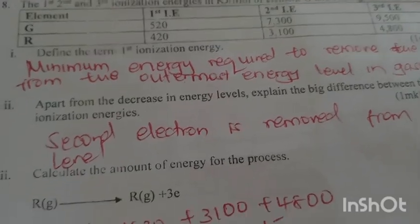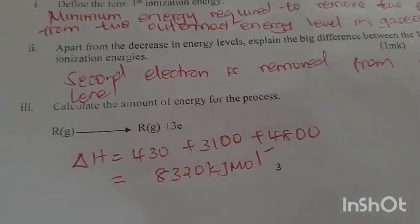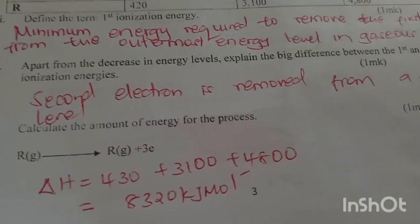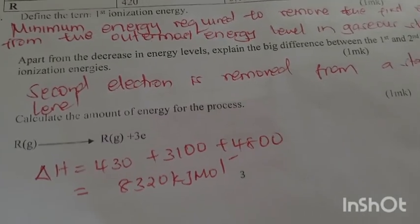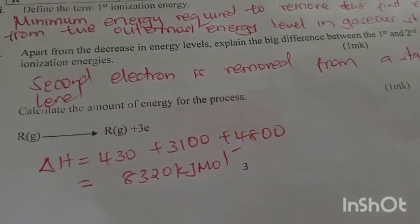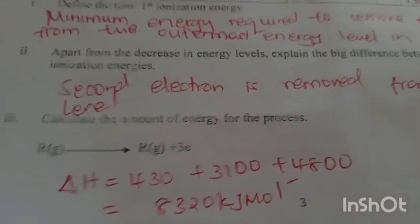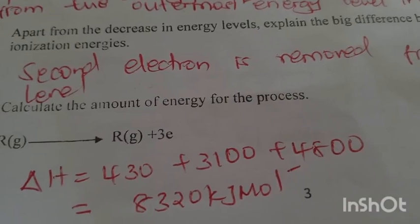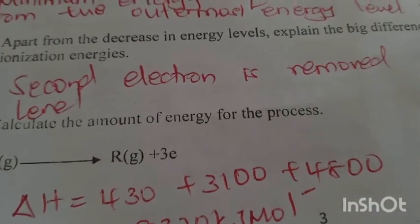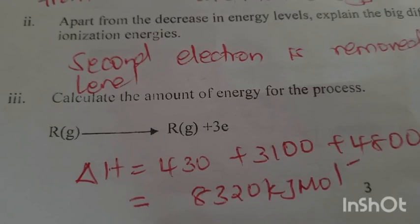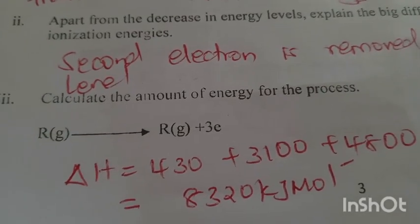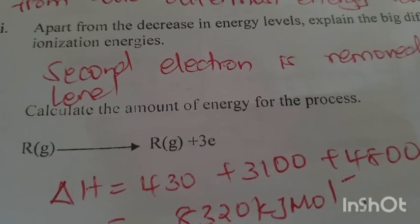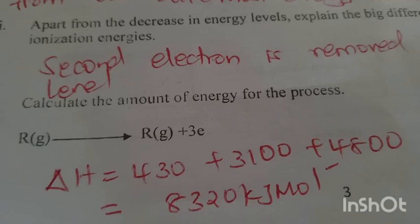Apart from the decrease in energy level, explain the difference between the first and second ionization energy. The first ionization energy is less compared to the second because once the electron is removed from the outermost energy level, the remaining electrons are strongly attracted to the nucleus, making it very difficult to remove the second electron.